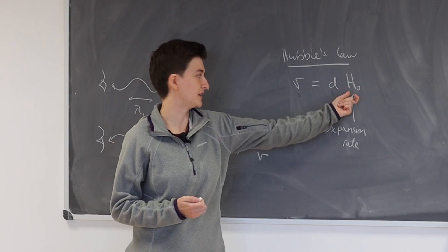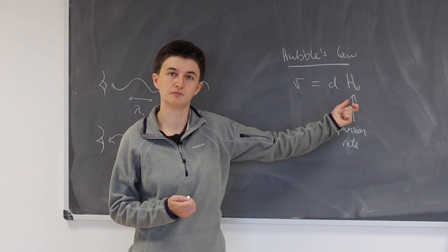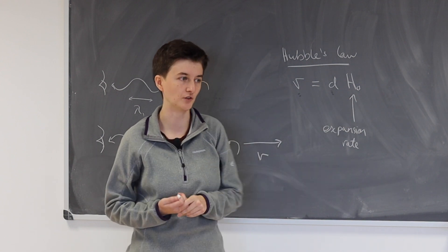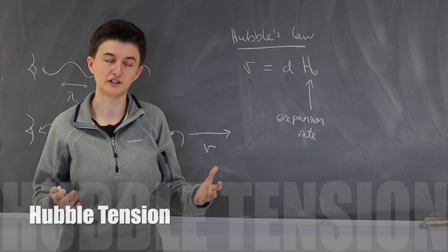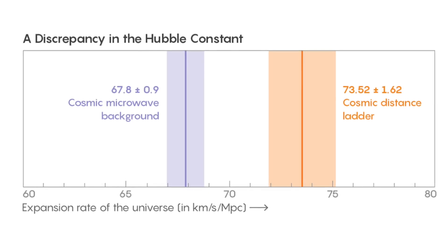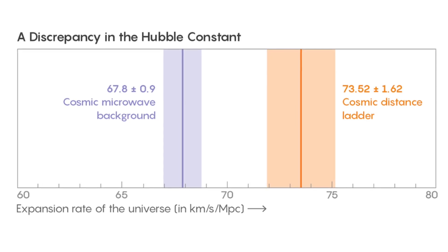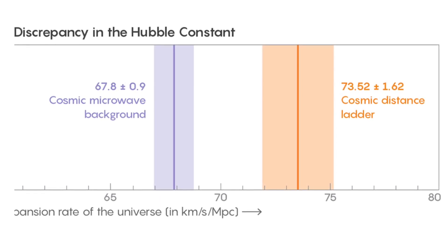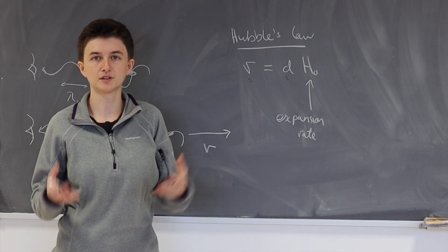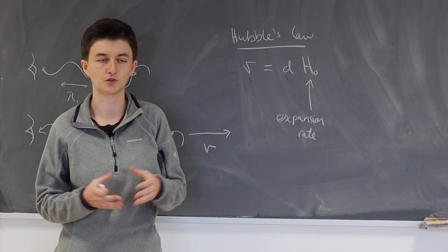That's fine, but there's many different ways we can use to measure H0, and I'll discuss one of those in a moment. But the problem is that all of these different measurements don't agree. And in fact, they disagree so severely that it's not just down to random chance, we really think there's a statistically significant tension between these different measurements.